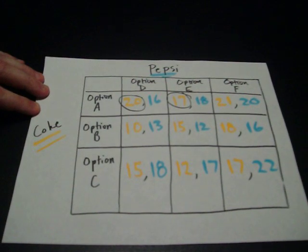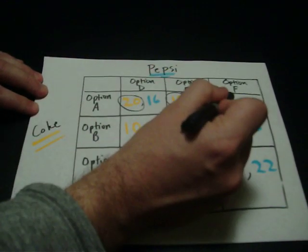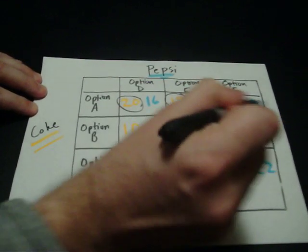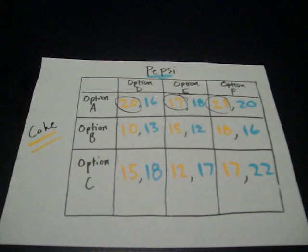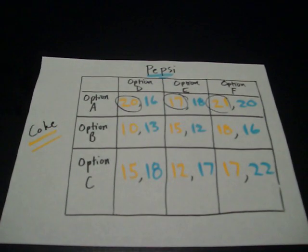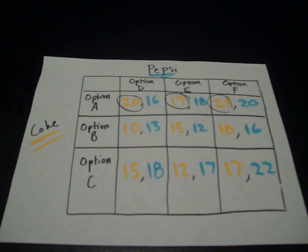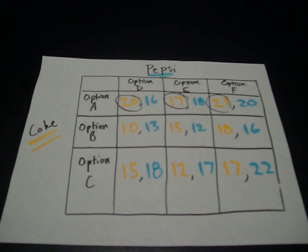And if Pepsi picks option F, again, Coke is going to pick option A, because $21 million is higher than $18 million, higher than $17 million. So all three times, we see that Coke picked option A. That's called their dominant strategy. If they pick the same thing every single time, that's what we call their dominant strategy.